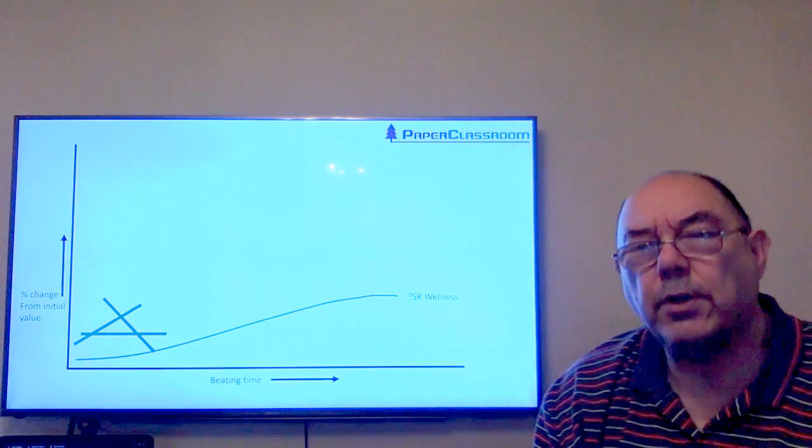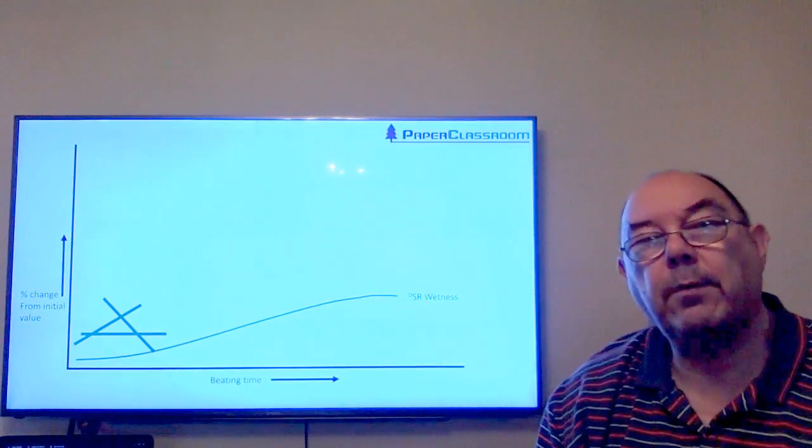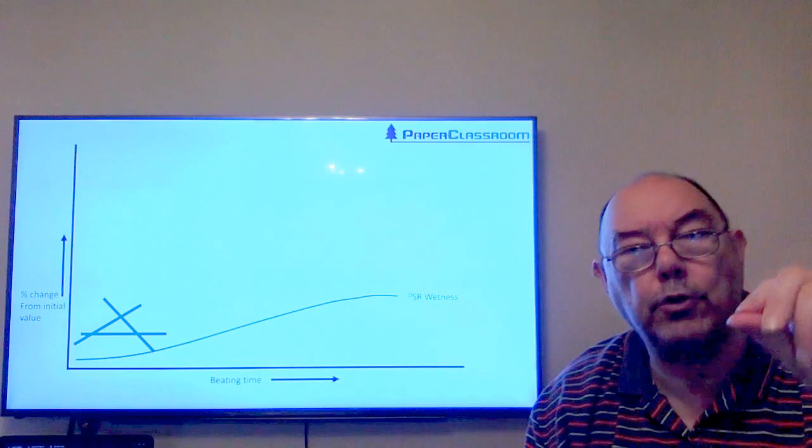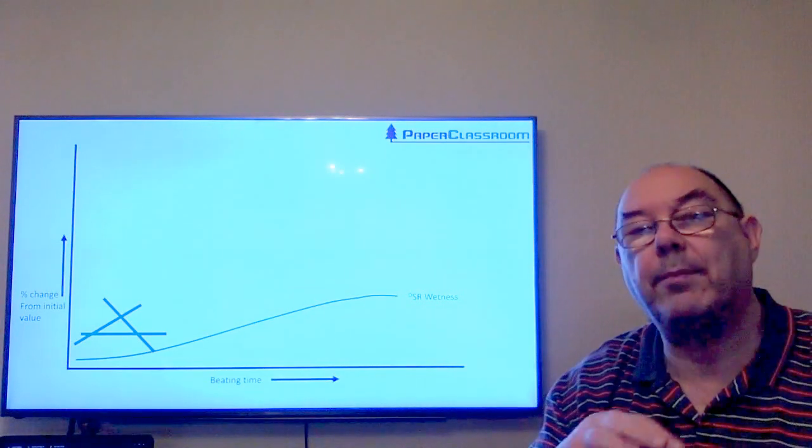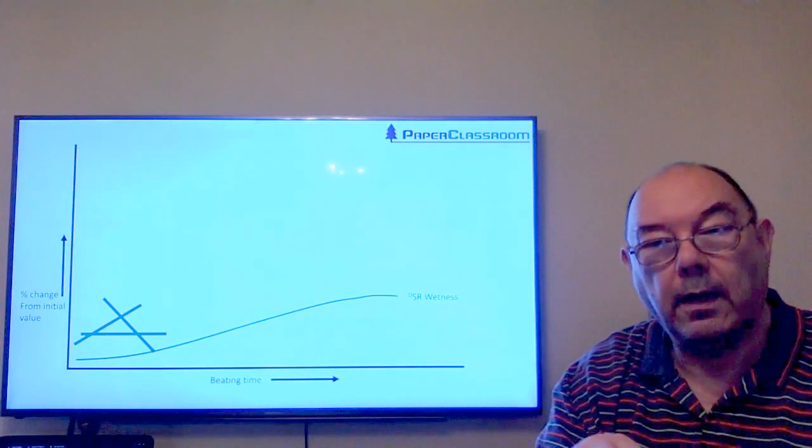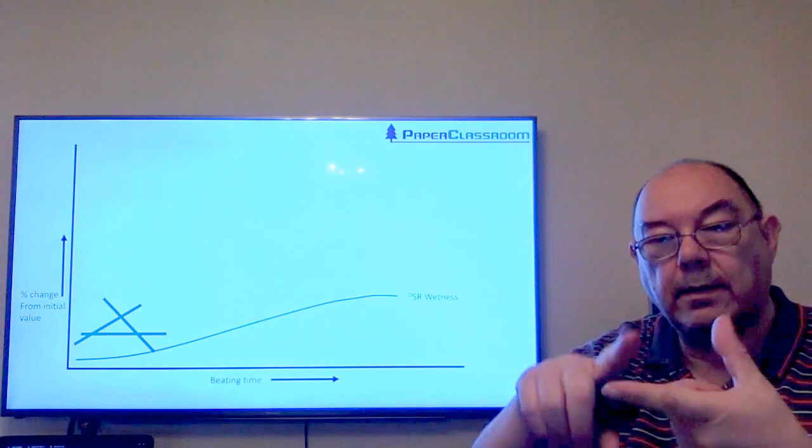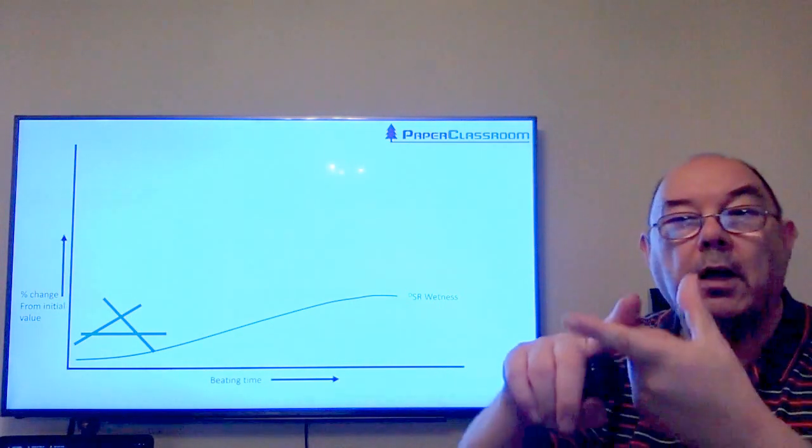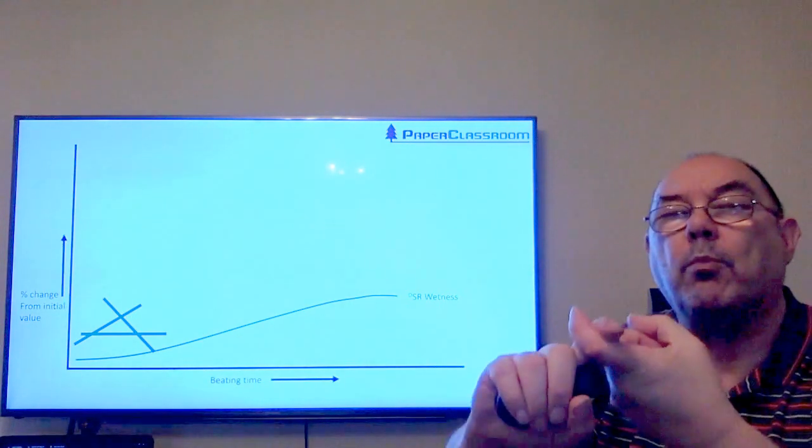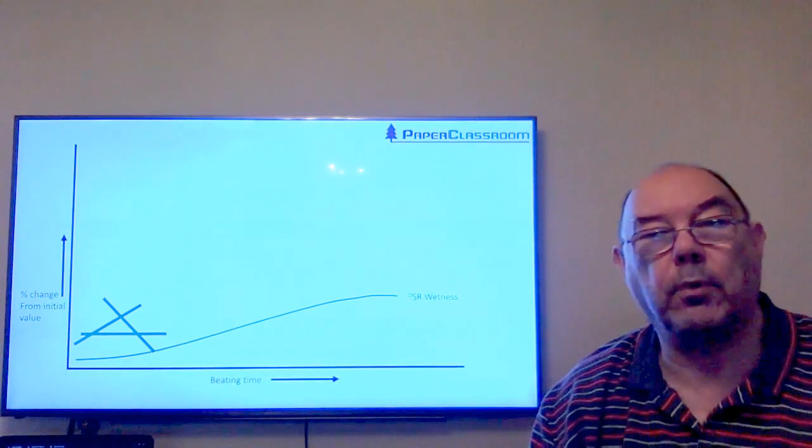We're also doing internal fibrillation. Internal fibrillation results in the lumen being crushed, which makes the fiber quite flat and therefore more flexible. Because it's more flexible, the fibers will bend over each other and fill in the gaps more.